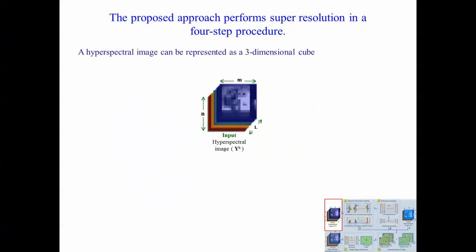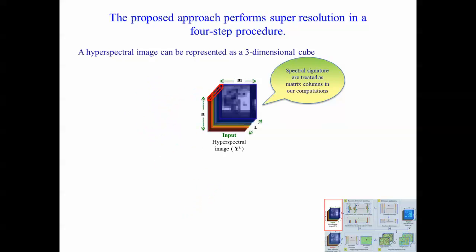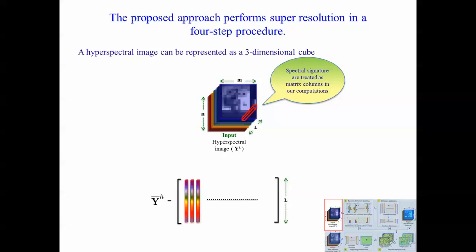As shown in the figure, a hyperspectral image can be represented as a three-dimensional cube. Each pixel of the image is an L-dimensional spectral signature. For computations, we arrange the spectral signatures as the columns of matrices, meaning an M by N by L dimensional cube is treated as a matrix with L rows and M by N columns.